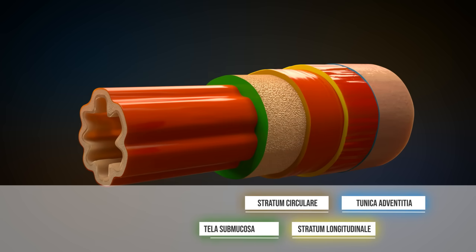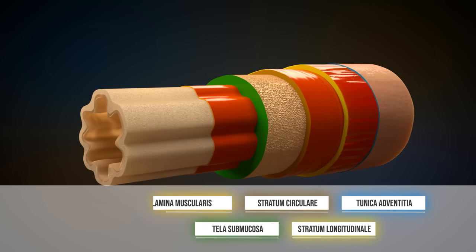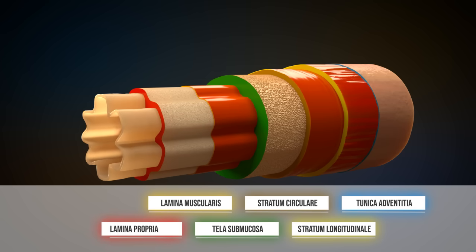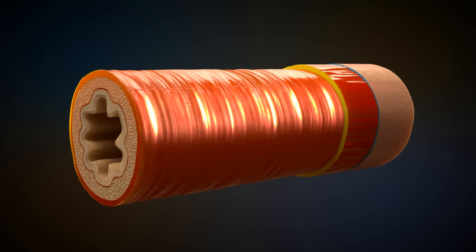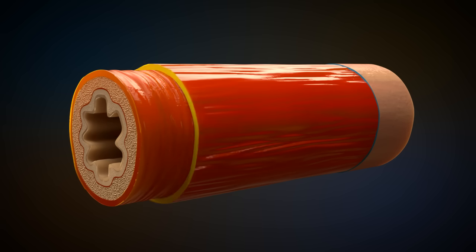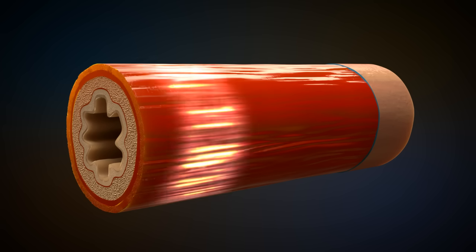The esophagus consists of several layers. These layers occur throughout the entire digestive tract. The two outer muscle layers are responsible for peristalsis. Through these two muscles, the bolus can be transported from the mouth to the stomach, even if the person is standing on his head.